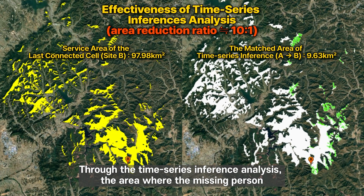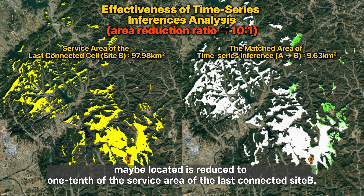Through the time series inference analysis, the area where the missing person may be located is reduced to one-tenth of the service area of the last connected site B.